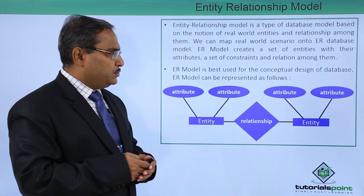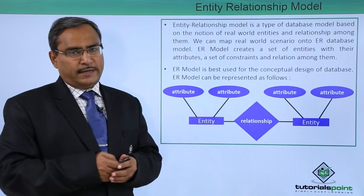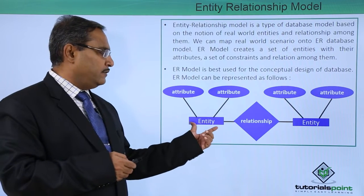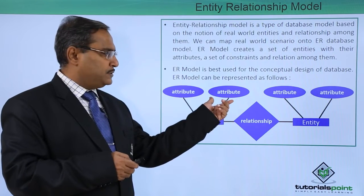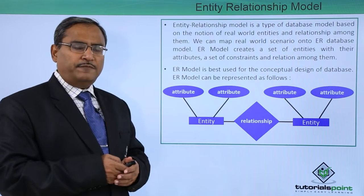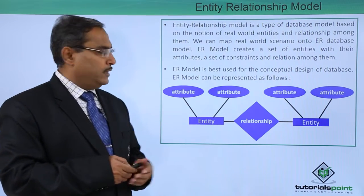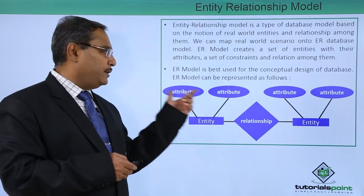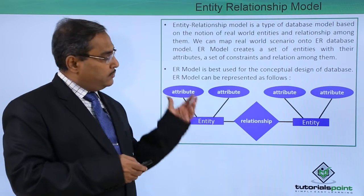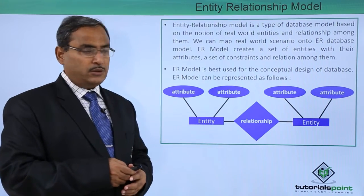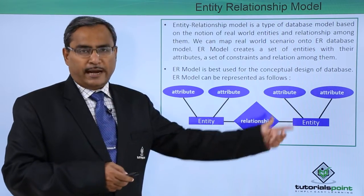ER model is best used for conceptual design of a database. ER model can be represented as follows: entities will be represented in the form of a rectangle, attributes will be represented in the form of an ellipse, and relationships will be represented in the form of a diamond. Lines show the links between them. Here we have two entities, each having two attributes — it is not mandatory that connected entities have the same number of attributes; it can have 5 or 50 attributes. The relationship connects one entity with another.